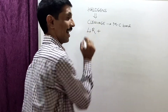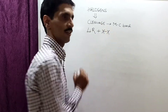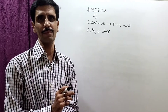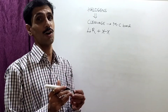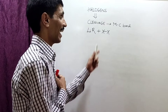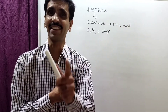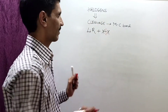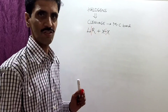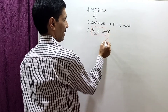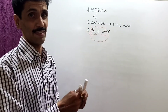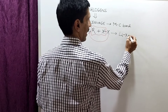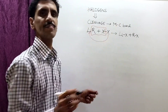Now when I treat LiR with halogen X2, as I showed you previously when explaining the preparation of organometallic compounds, the bond between X and X breaks, and the bond between Li and R breaks. R goes with X and the other X combines with Li. So the product has to be LiX plus RX. Similarly, we have AlR3 — aluminium is another electropositive element. Since it is electropositive, there has to be a complete cleavage, and the product is AlX3 plus RX. The valency of aluminium is three.